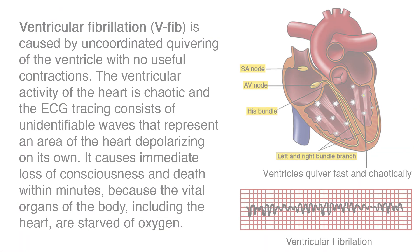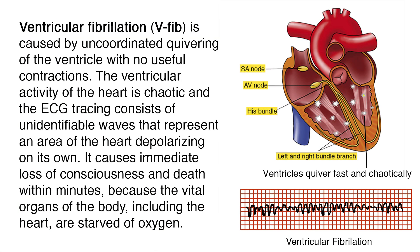Ventricular fibrillation, or V-fib, is caused by uncoordinated quivering of the ventricles with no useful contractions. The ventricular activity of the heart is chaotic, and the ECG tracing consists of unidentifiable waves that represent an area of the heart depolarizing on its own.